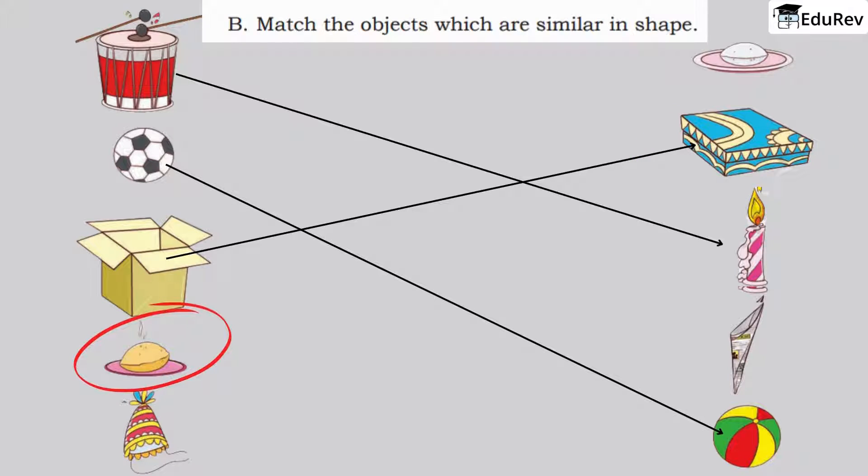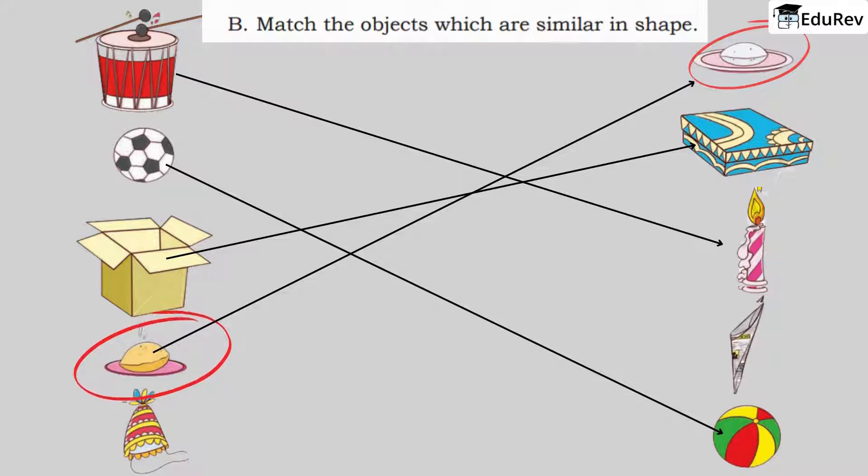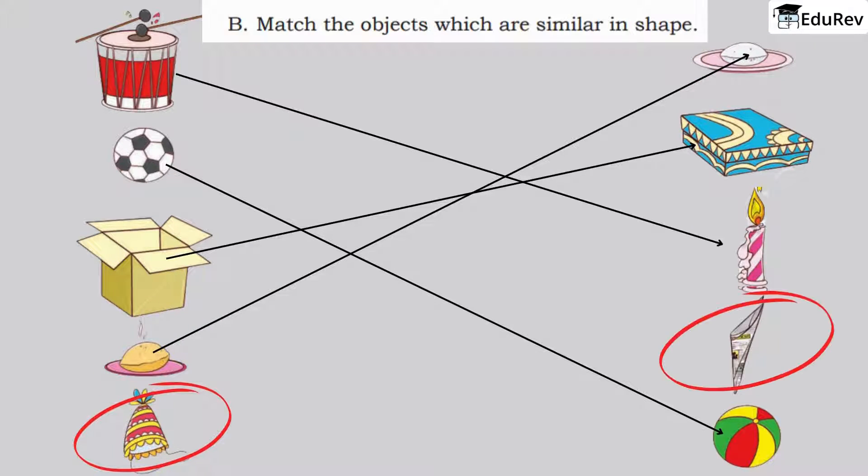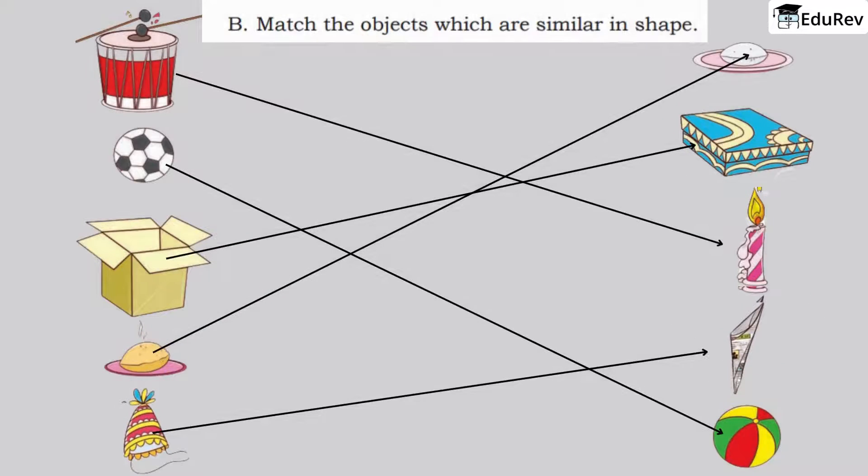The fourth picture is a chapati. It looks like the idli here, so match it with this. The fifth picture is a cap. It looks like a cone here. Rotate it and see. They look similar, so we can match it with this.